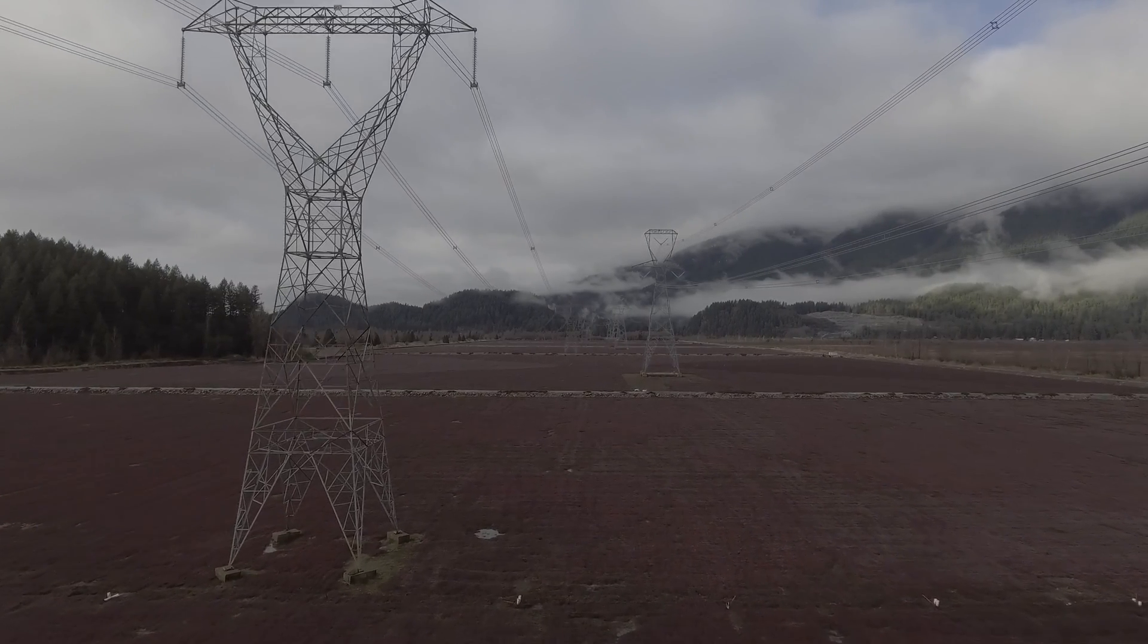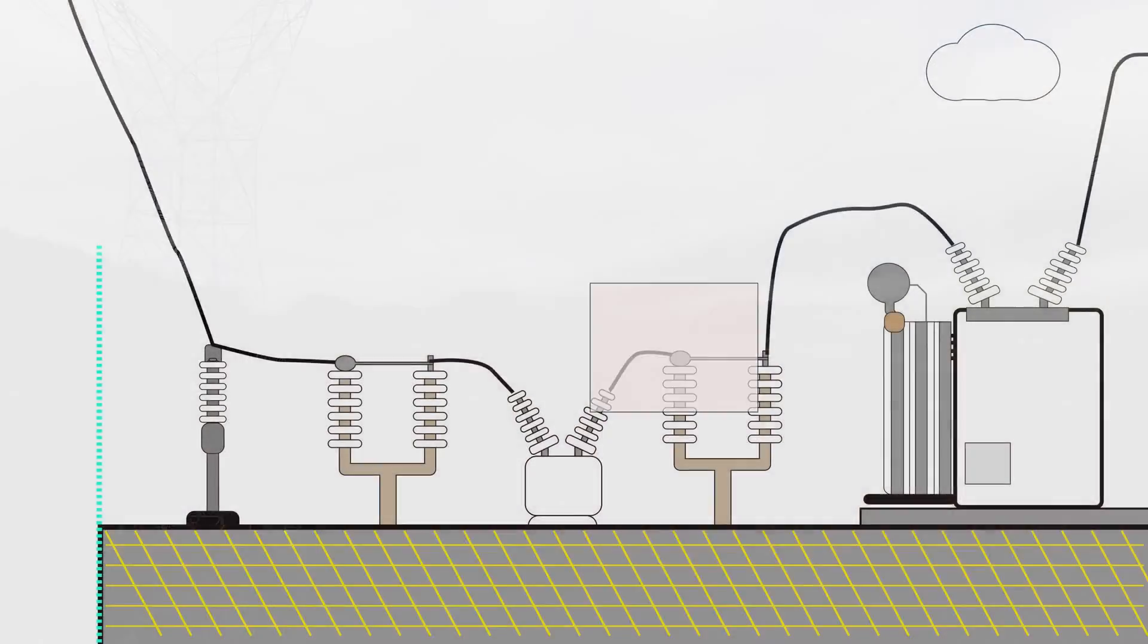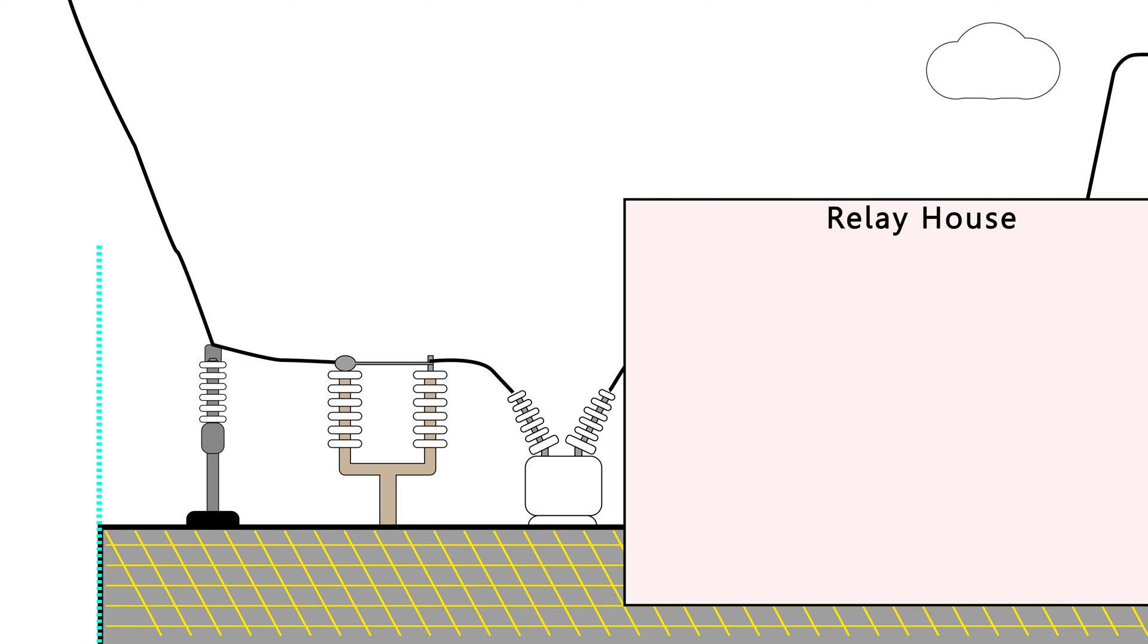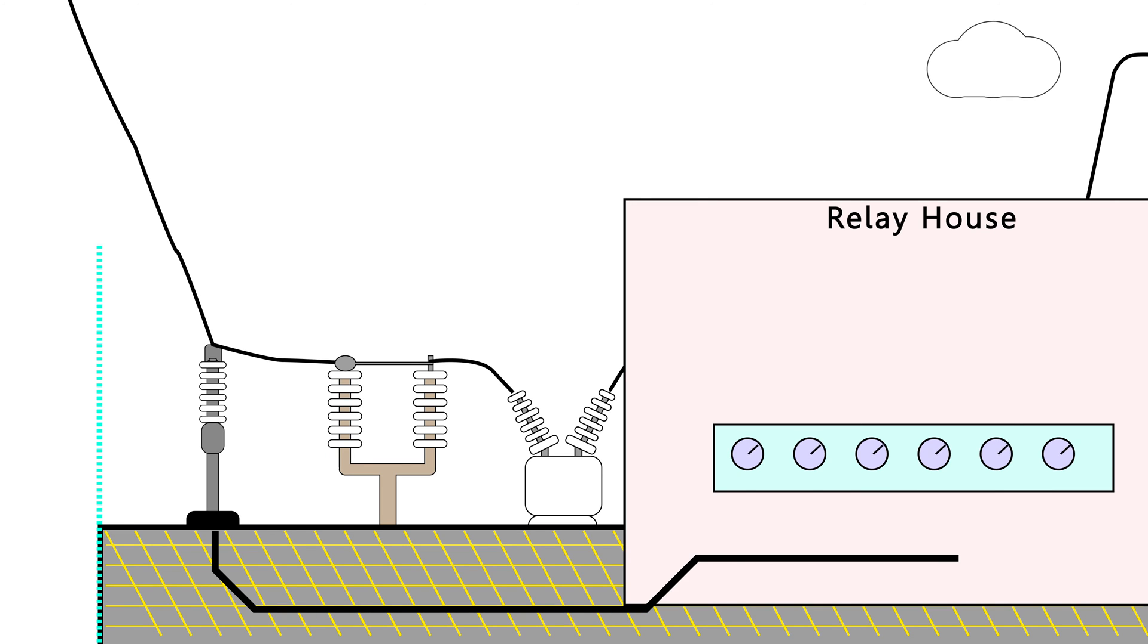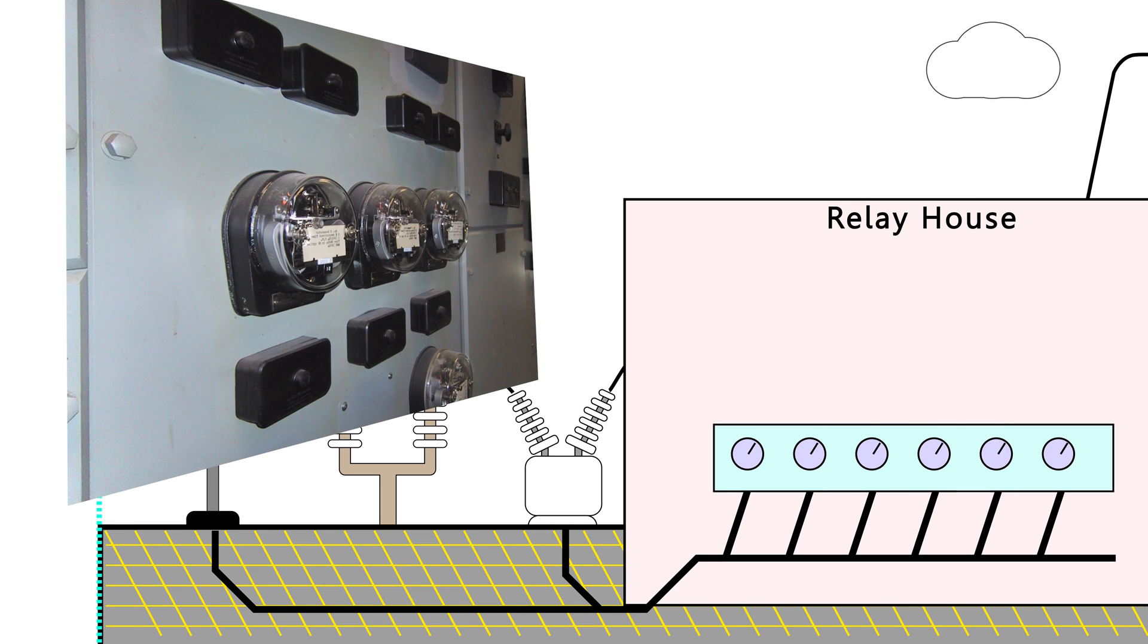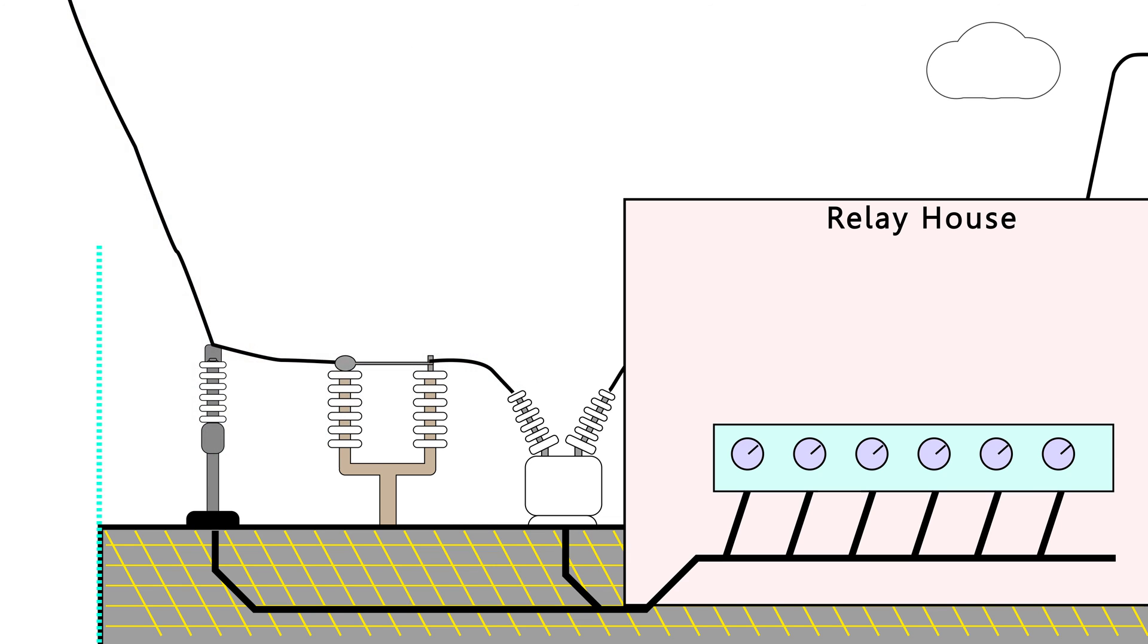We also have in a substation a building called the relay house. And as the name suggests, this is home to the relays. Of course, the job of the relay is to monitor the voltage and current and make a decision on whether there's a fault. If there is a fault, it will send the signal to the circuit breaker to trip. So the relay is an automated way to do this.